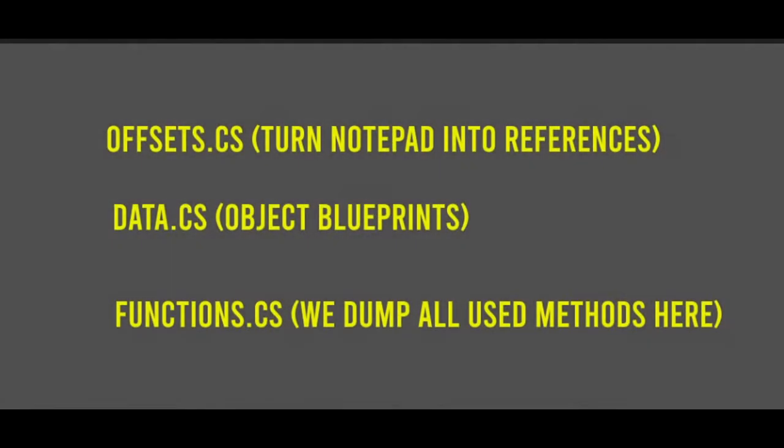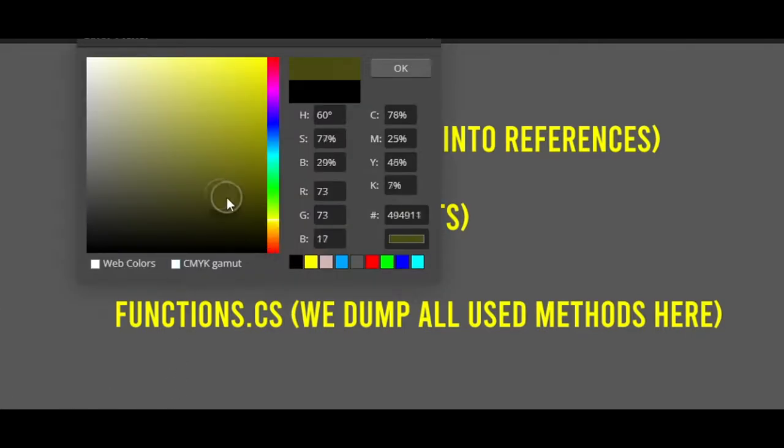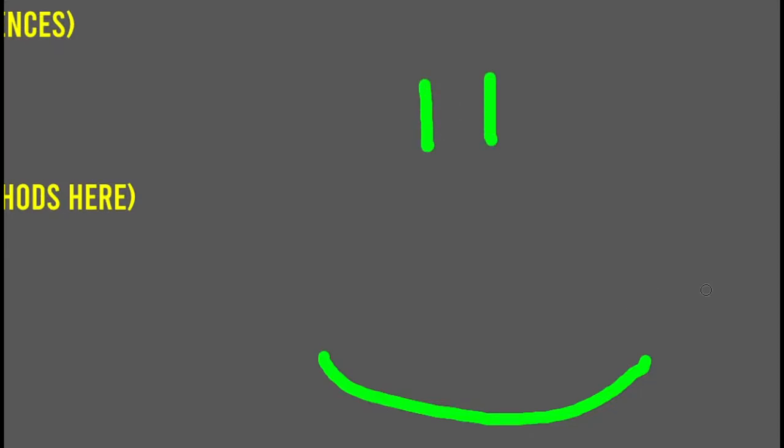Welcome to part 3.5. Because the aimbot takes a bit of time, there will be two parts. In this part we will create all of the scripts and retrieve our player's information. Make sure to subscribe and like the video so you'll get notified when the next part comes out.